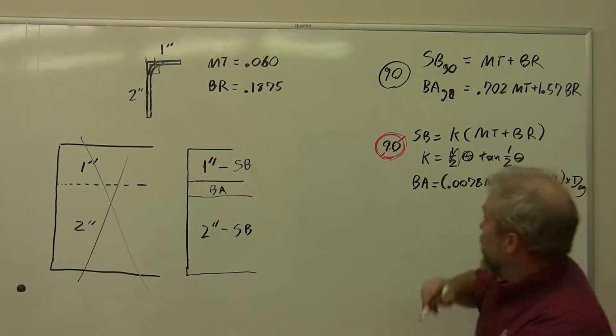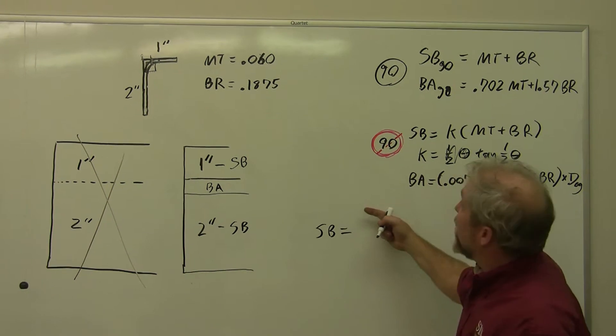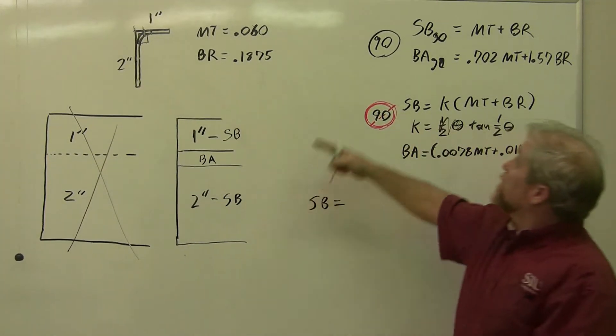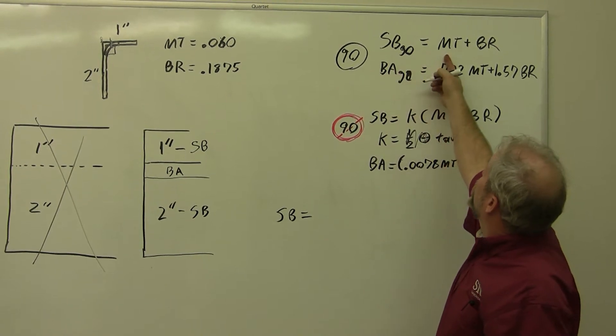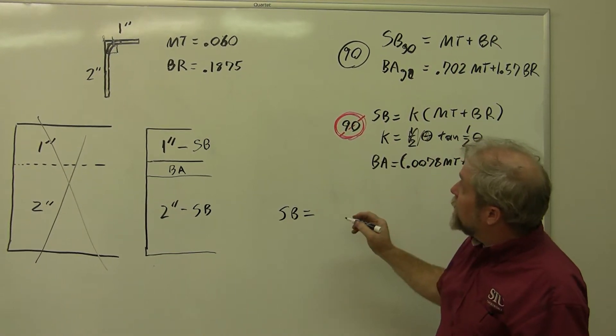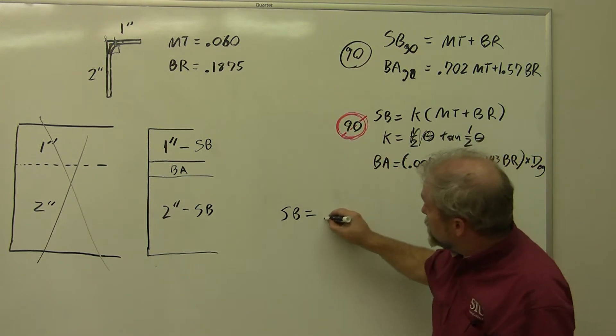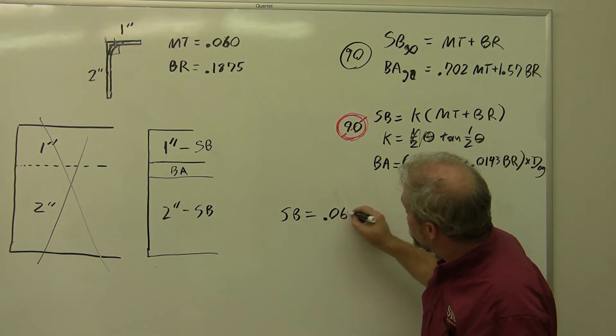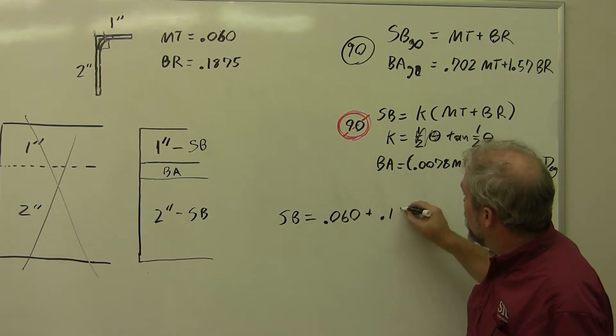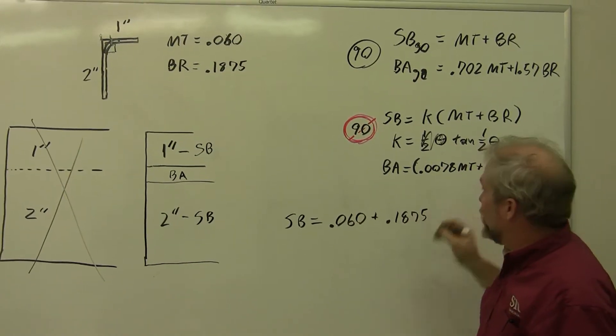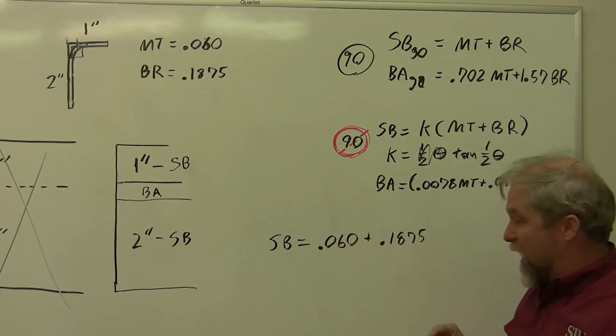Luckily, our formulas are back. So first of all, let's do our setback. Setback equals, this is a 90 degree bend, so I can use my original formulas. Setback at 90 equals our material thickness plus our bend radius. Our material thickness was 60 thousandths, so 0.060 plus our bend radius, 0.1875. And that is going to give us our setback.